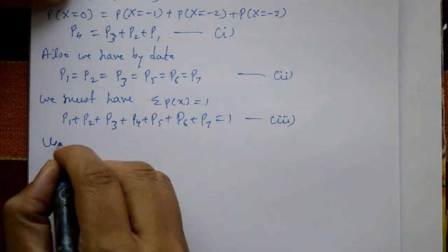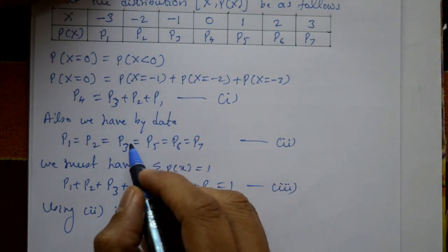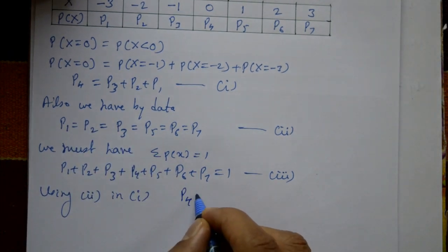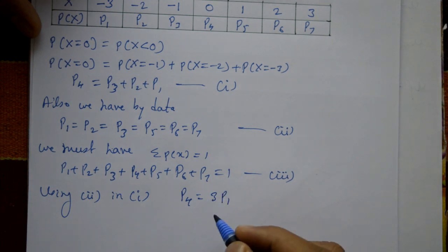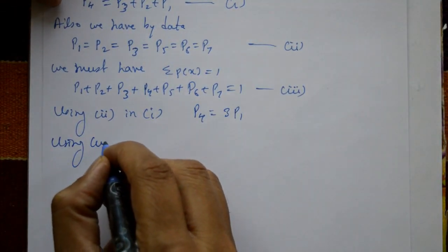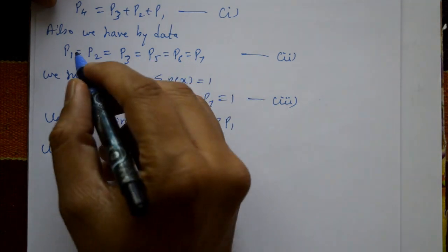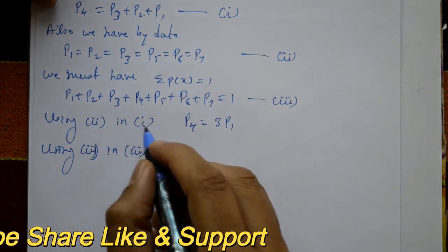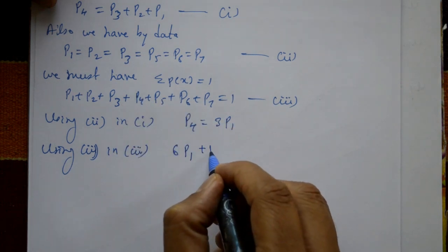Using equation 2 in equation 1: since p3 equals p2 equals p1, all are the same, so p4 equals p1 plus p2 plus p3 equals 3 times p1. Now substituting into equation 3: the six values p1, p2, p3, p5, p6, p7 are all equal to p1, giving 6 times p1, plus p4, equals 1.